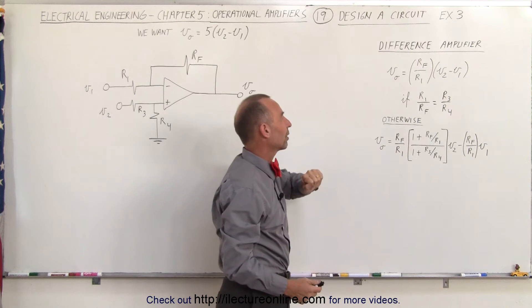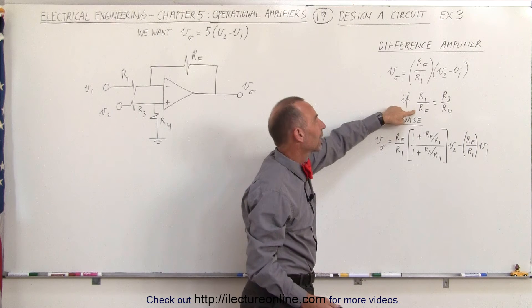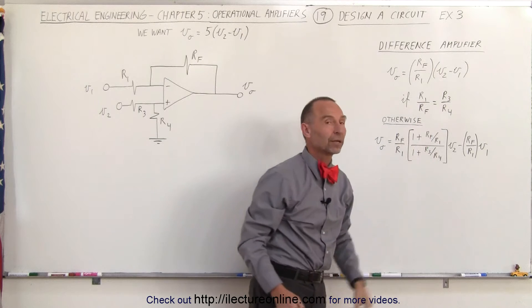We don't have to go to this equation right here, which of course means that the requirement is that the ratio of R1 to the feedback resistor must equal the ratio of R3 divided by R4.